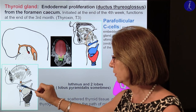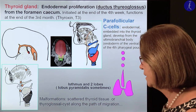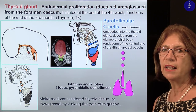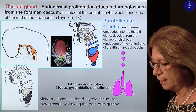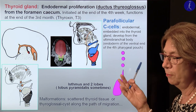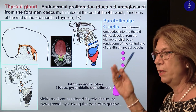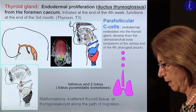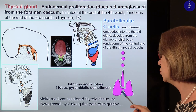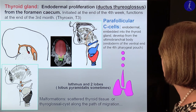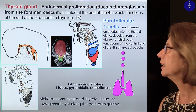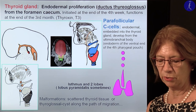Sometimes the distal part of the thyroglossal duct will remain, giving a pyramidal lobe — I would call this a variation rather than a malformation. But it is already a minor malformation if tissue islets remain along this line of migration; sometimes these may be embedded into the hyoid bone. This is important medically because these scattered tissue islets may have the same diseases as the thyroid gland itself — hyperfunction causing problems, or tumors or other diseases. So it's important to know that thyroid tissue is not always only in the thyroid gland. Thank you for your attention — the parafollicular C-cells were already discussed before.